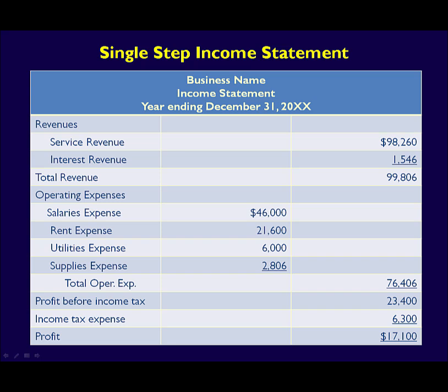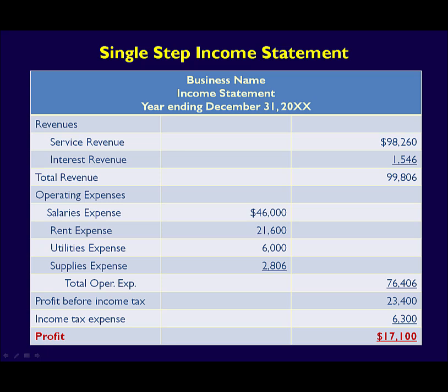The single-step income statement shows the profitability of a business over a period of time. It includes the financial reporting elements revenues and expenses, both listed from the largest to the smallest amount. It's important to note that the income tax expense is a separate line item and is never included as part of the operating expenses.